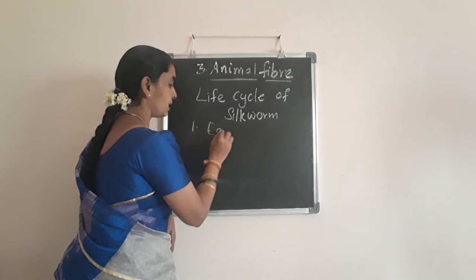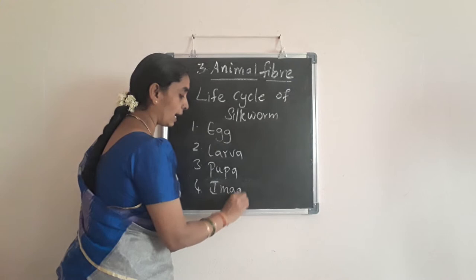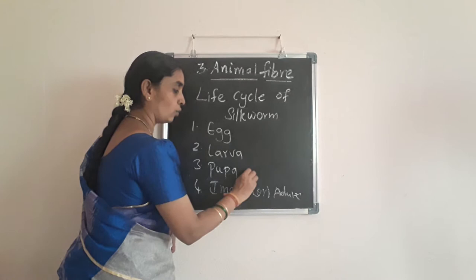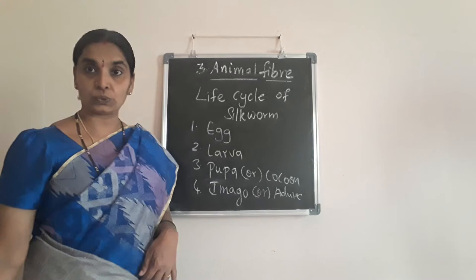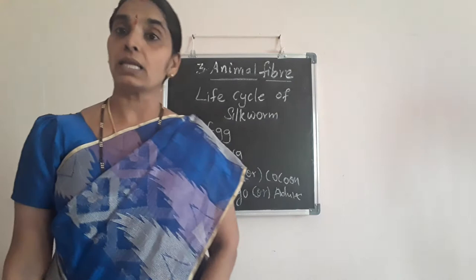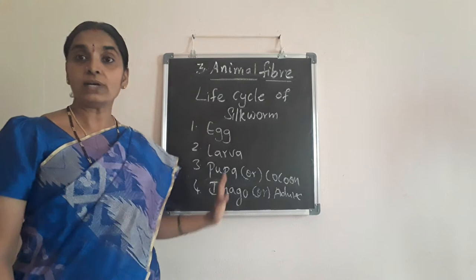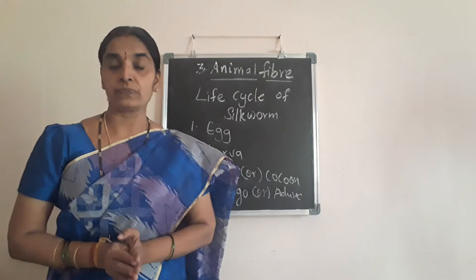The different stages in the life cycle of silkworm are egg, larva, pupa, and the last one is imago or adult stage. The scientific name of silkworm is called Bombyx mori.